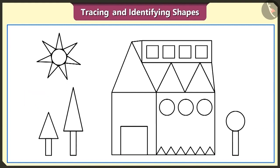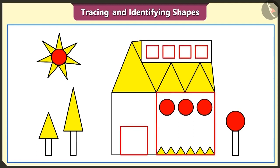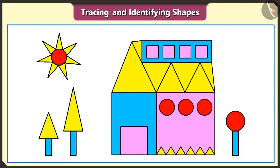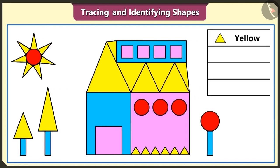Let's fill this figure with colours. First of all, we will fill all the triangles with yellow colour. Now we will fill in all the circles with red colour. There are several square shapes in this figure — we will fill in the square shapes with pink colour. The rectangle shape is yet to be filled, so we will fill the rectangle shapes with sky blue colour. We have filled the triangles with yellow, the circles with red, the squares with pink and the rectangles with sky blue colour.